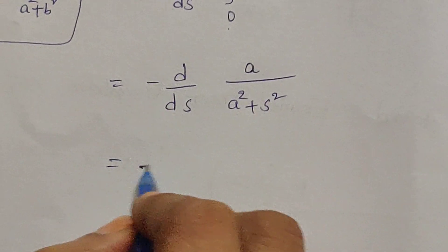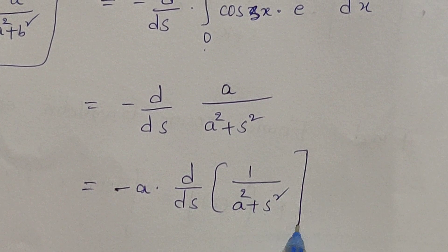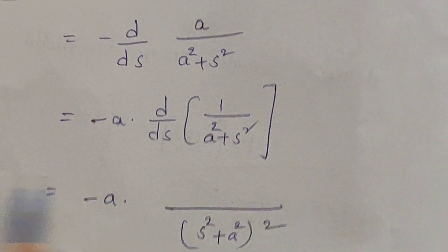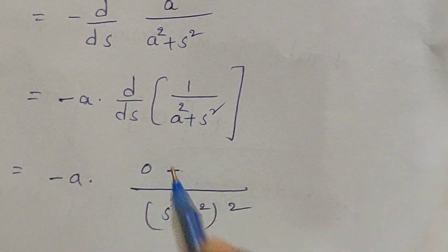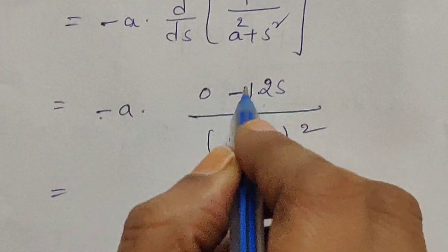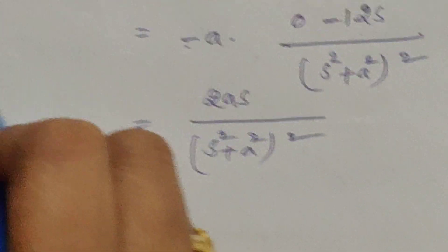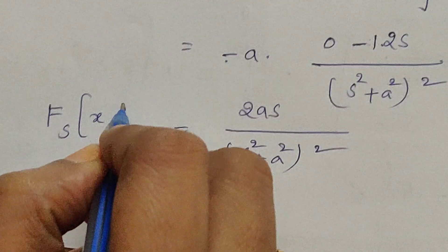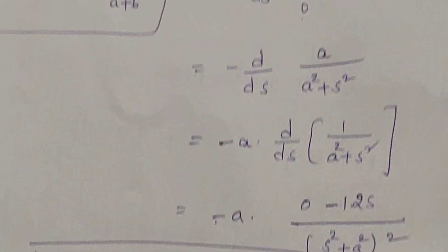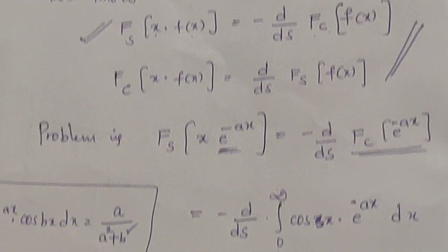Now we differentiate: take a outside since it is free from s, giving −a · d/ds [1/(a² + s²)]. Applying the derivative: numerator derivative is 0, minus numerator times denominator derivative 2s, all over (s² + a²)². This gives −a · (−2s)/(s² + a²)² = 2as/(s² + a²)². This is the Fourier sine transform of x·e^(-ax). Note this is analogous to the Laplace transform result for t·sin(at), which is 2as/(s² + a²)².